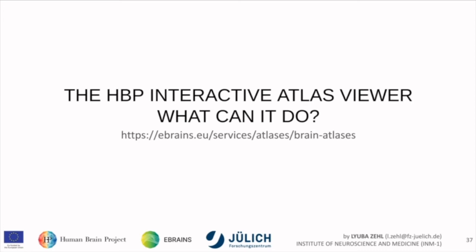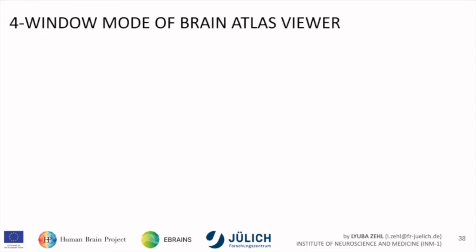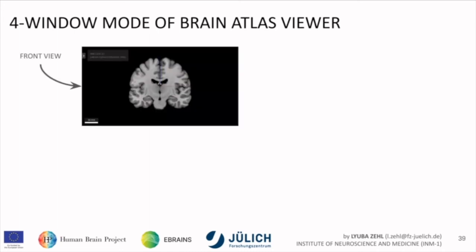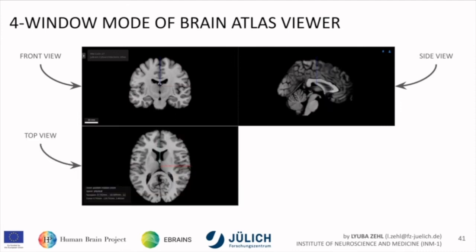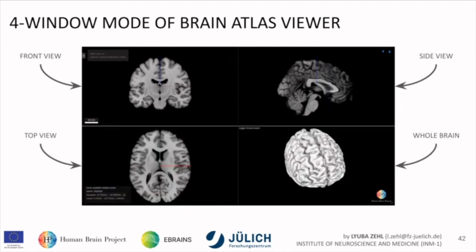Besides the human atlases we also have one for rats and one for mice — the Allen Mouse atlas and the Waxholm atlas for rats — you can find them on the same page. But today we're sticking to the humans. For the Atlas viewer there's a four-window mode: front view, side view, top view, and a 3D whole brain. To display the 3D view, you need to toggle the octant button usually placed within that field, and then you see the surface of the brain.